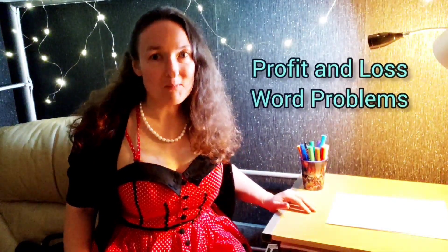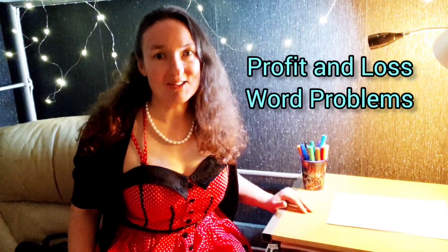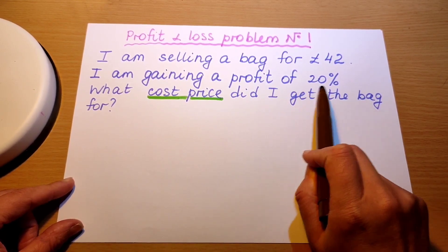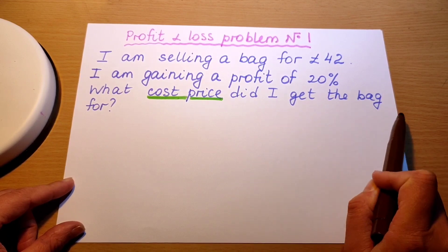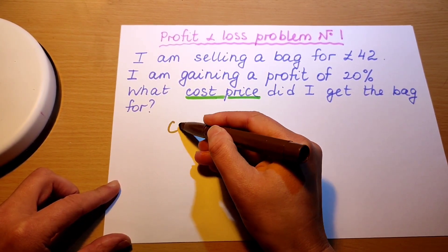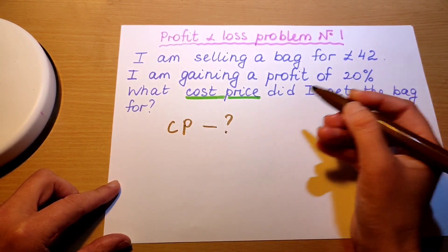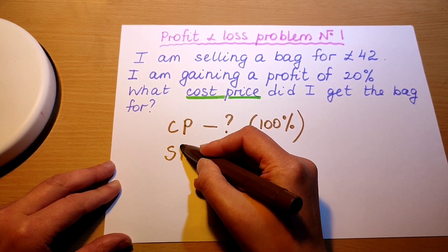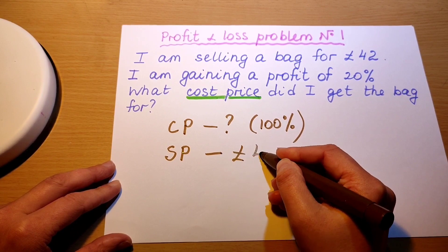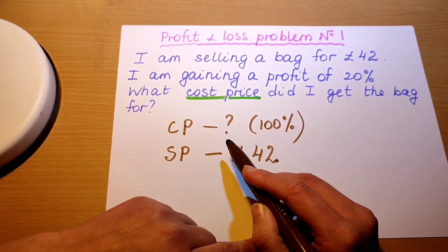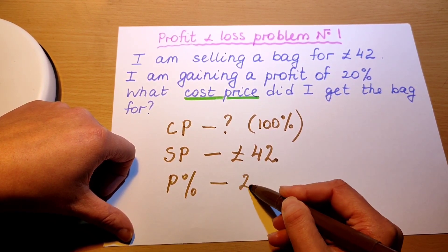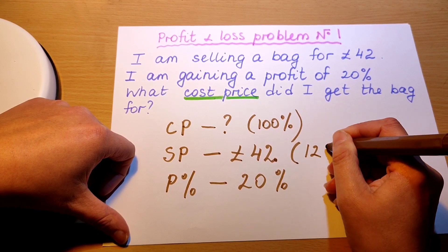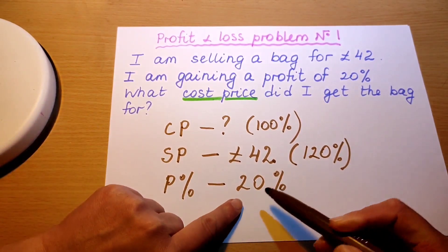Now let's look at some word problems to do with profit and loss percentages. Profit and loss problem number one: I'm selling a bag for 42 pounds and I'm gaining a profit of 20 percent — what cost price did I get the bag for? So we know cost price is a question mark, and cost price is always 100 percent. We know the selling price was 42 pounds and the profit percentage was 20 percent. That means my selling price altogether was 120 percent, because we're adding 20 percent on to 100.